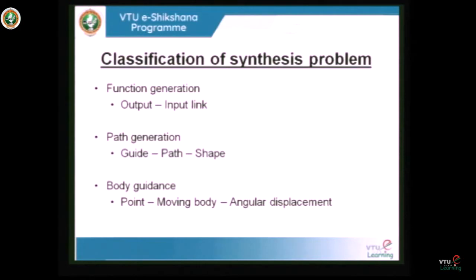Problems in body guidance may include simple translation or a combination of translation and rotation. An important note regarding dimensional synthesis: we want to synthesize dimensions for a known output. We know the desired output, but in practice when implemented, the actual motion is different from the desired motion. The difference between the desired motion and the actual motion obtained is known as structural error or dimensional error.